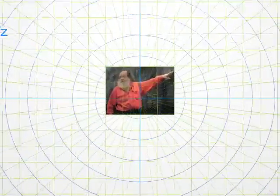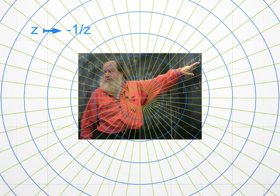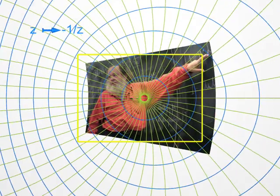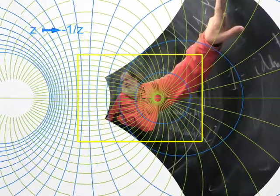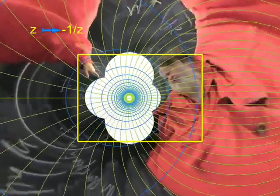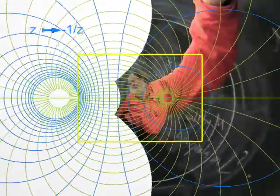Now let's go to a new transformation, sending the point Z to minus 1 over Z. Don't forget, with complex numbers one can add, multiply, but also divide. Not by zero, of course. Doesn't this image remind you of the Sistine Chapel?